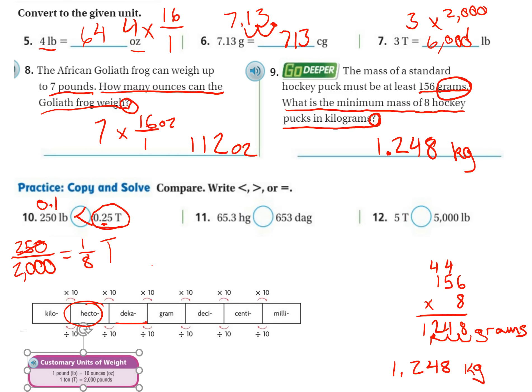So I'm starting with hectograms and I'm going to decagrams. So I'm moving to the right, and I'm moving just one. So I take my first number, 65.3, move my decimal over to the right one, and that would be 653. And this is 653, so these are equal.